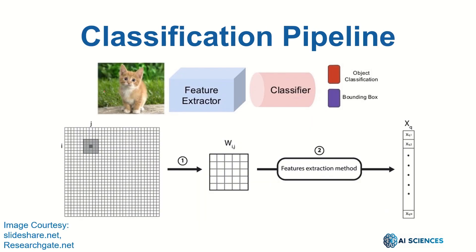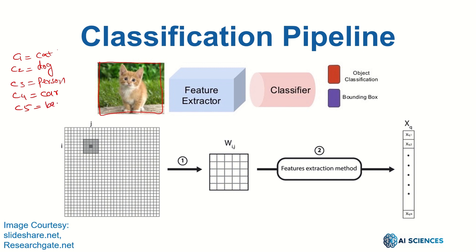Let's discuss some classic techniques for how to actually classify an object. Consider this image that contains a cat, and assume we have a set of predefined classes: class 1 is cat, class 2 is dog, class 3 is person, class 4 is car or vehicle, and class 5 is none of the above or background. So let's say we have only five classes, and we are given a large image and we want to find out the objects.